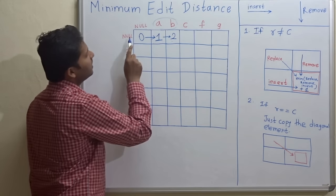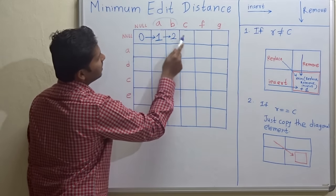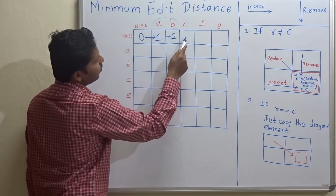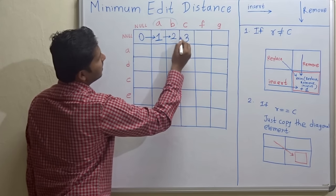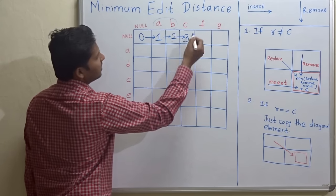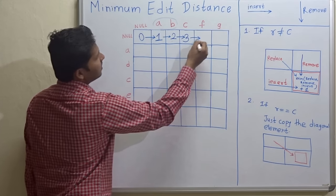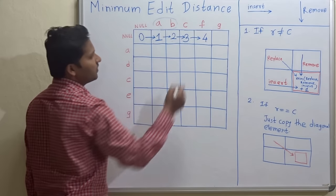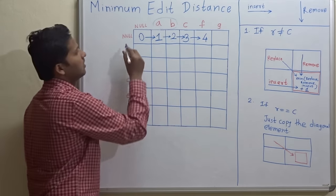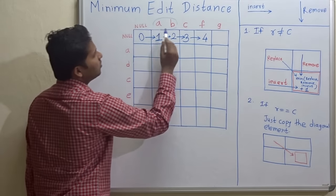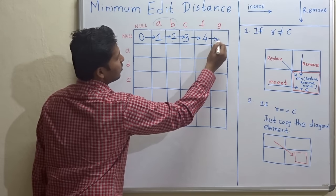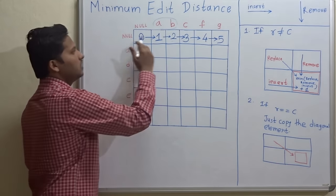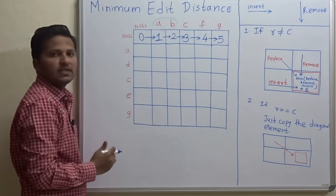For converting null to string 'abc', we have to write in this cell the number of operations — that is three. Similarly, to convert null to 'abcf', the number of operations are four — we have to insert four characters. Convert null to 'abcfg', the number of operations are five. This is how we fill the first row — that is the base condition.